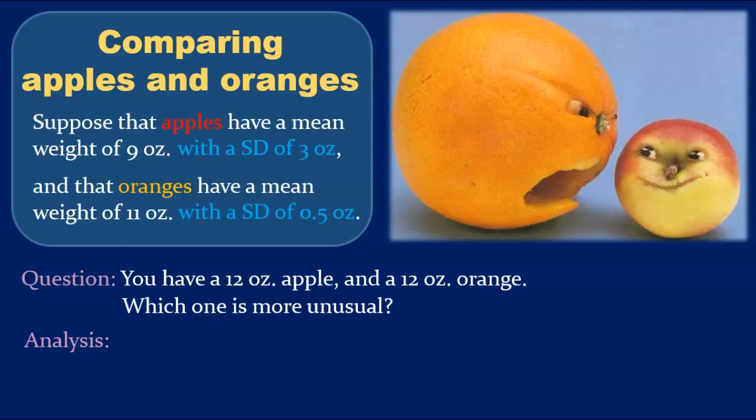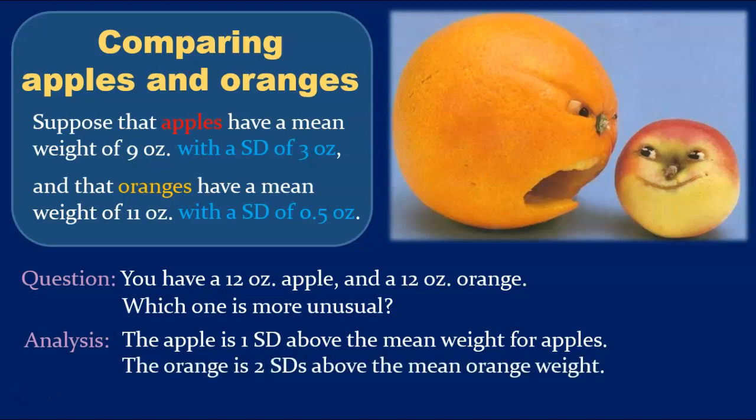Now, let's do a proper analysis. Yes, the apple is 3 ounces above the mean, but since the standard deviation for apples is 3 ounces, the apple is just one standard deviation above the mean weight for apples. On the other hand, the orange is only 1 ounce above the mean, but the standard deviation for oranges is just half an ounce. So, the orange is 2 standard deviations above the mean orange weight. Thus, the orange is more unusual. So, even though they say you can't compare apples and oranges, you actually can with standard scores.